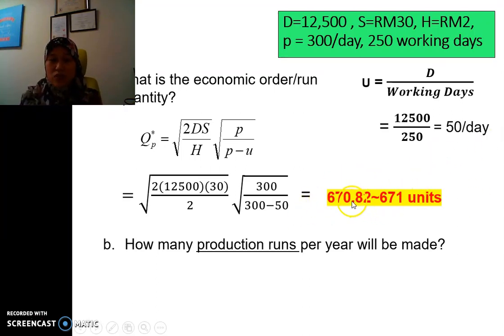So we answered the question, so the Q, the best Q is the optimal, is 671 units. And then how many product runs per year will be made? So it depends on your demand.